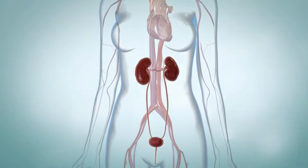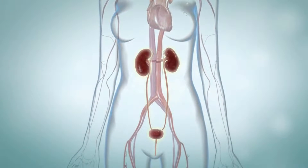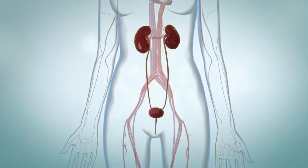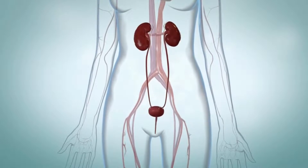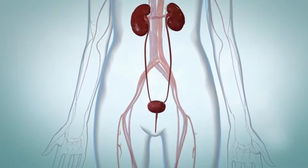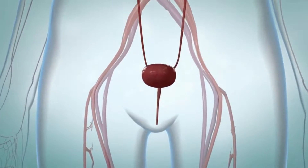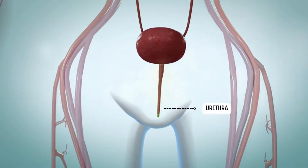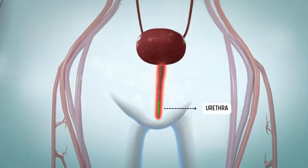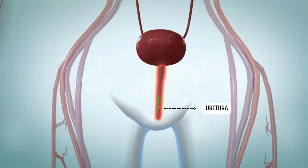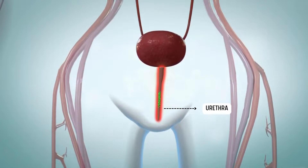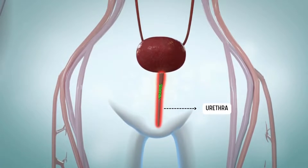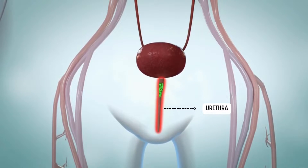Pyelonephritis is an infection of one or both kidneys. It often starts as a urinary tract infection, or UTI. A UTI is a common infection that occurs when bacteria, or sometimes viruses, enter the urinary tract. They usually enter through the urethra, the tube that carries urine out of your body.